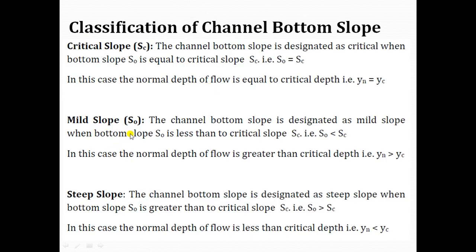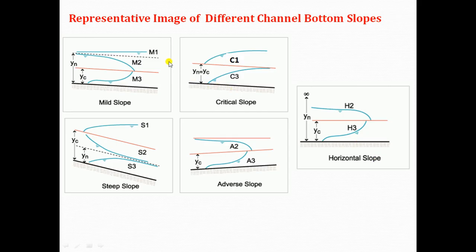Mild slope: the channel bottom slope is designated as mild slope when the slope of bed of channel S0 is less than the critical slope SC. In this case, the normal depth of flow is greater than the critical depth. In a mild slope channel, S0 is less than SC and the normal depth Yn is greater than the critical depth Yc.